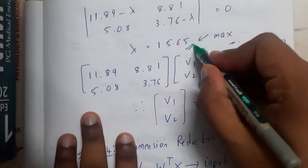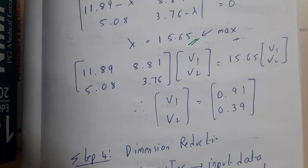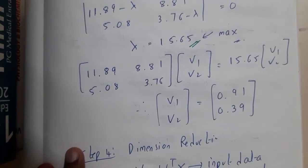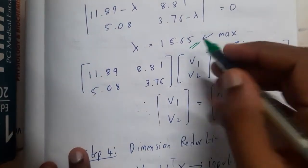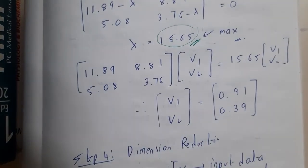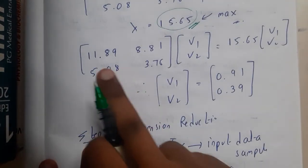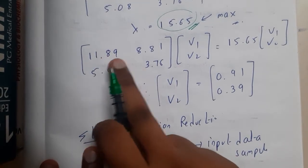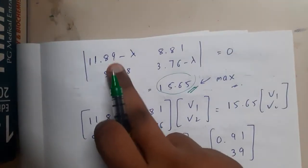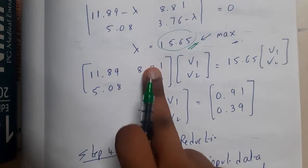You will be finding the eigenvalue, that is nothing but lambda value. Among the both lambda values, you will be selecting the maximum one. This is the maximum one which you got. With this maximum value, you will be using it somewhere. You will be writing the formula again.